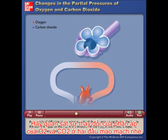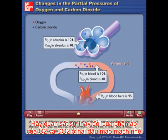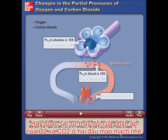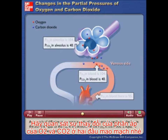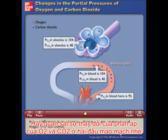As a result of diffusion, at the venous ends of the pulmonary capillaries, the pO2 in the blood is equal to the pO2 in the alveoli, and the pCO2 in the blood is equal to the pCO2 in the alveoli. With no differences in partial pressure, there is no more net movement of oxygen or carbon dioxide.